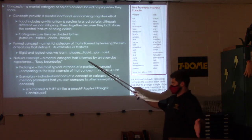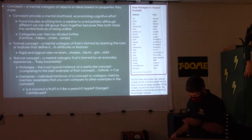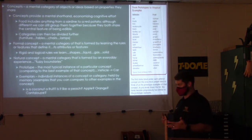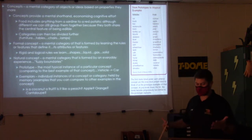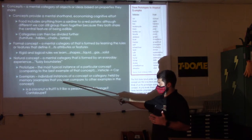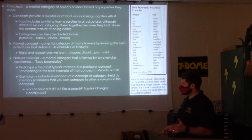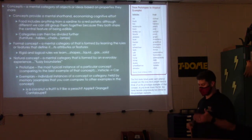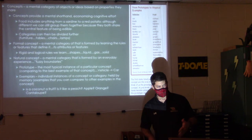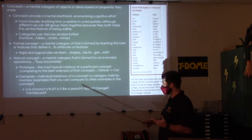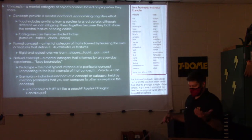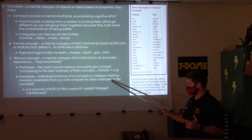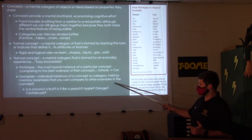A natural concept is a mental category formed by everyday experience, and they become fuzzy — you're not quite sure what they are, but you're building them, making these lists. You use two things to do it: a prototype and exemplars. A prototype is the most typical instance of a particular concept — comparing the best example of that concept. An exemplar is just any example — individual instances of a concept held in memory that you can compare to other examples.